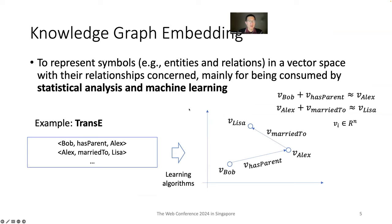Knowledge graph embedding is to represent symbols like entities and relations as vectors, such that relationships are preserved in the vector space. So the symbolic knowledge, after embedding, can be easily consumed by machine learning and statistical analysis. One typical example is TransE, which represents relational facts by the translation of the relational vector from one entity to another entity.